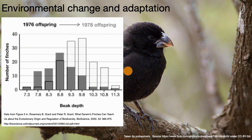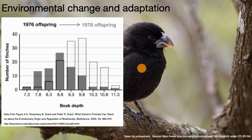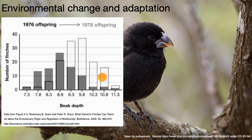Environmental changes don't always cause adaptation. If it's too severe — for example, if the drought was so strong that there were no seeds at all — you could have extinction, and the species disappears altogether. But here we have an example where, in just two years, a species was actually able to adapt a pretty good bit.